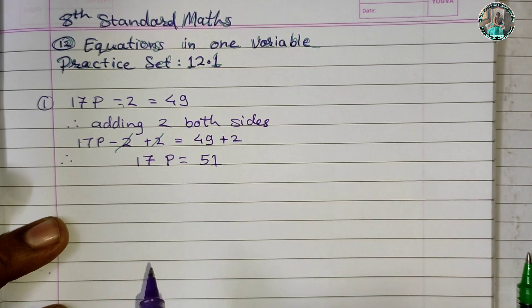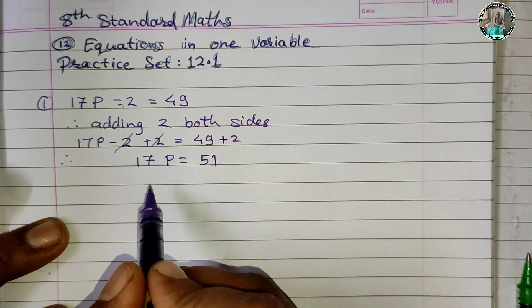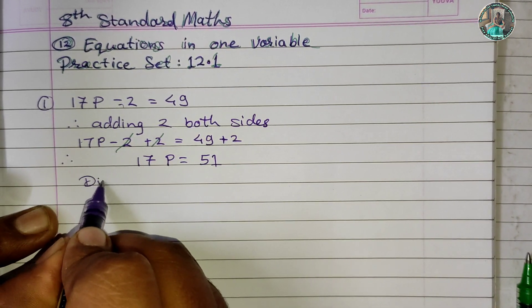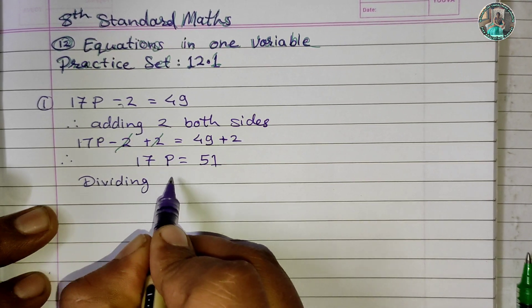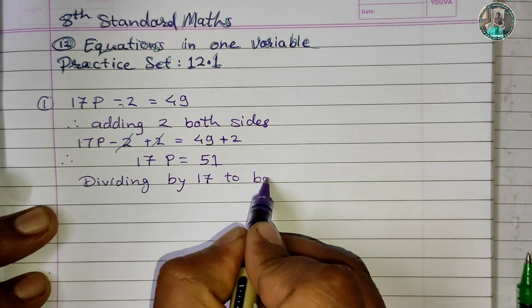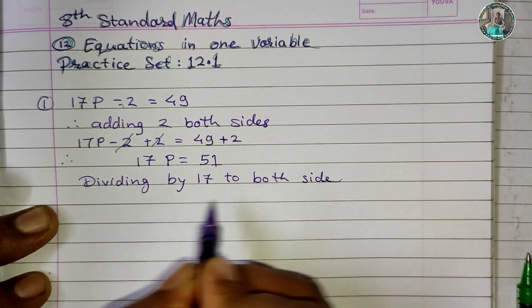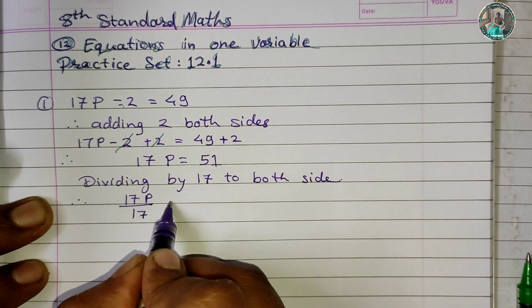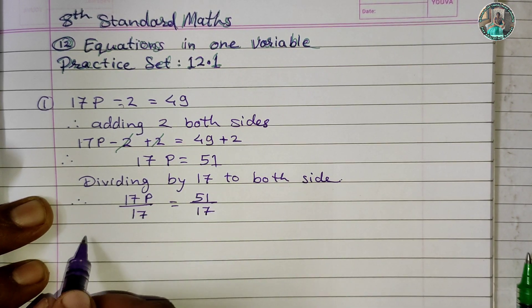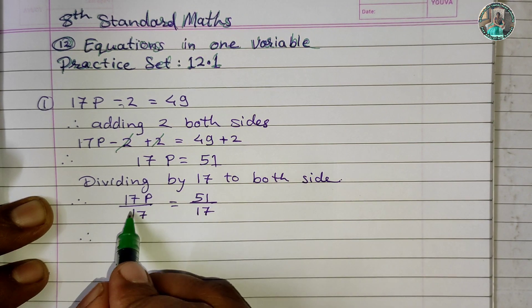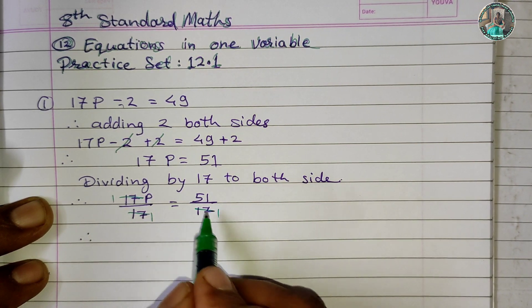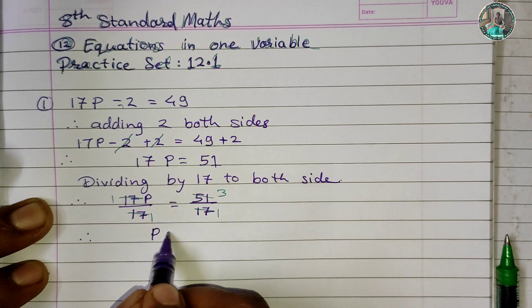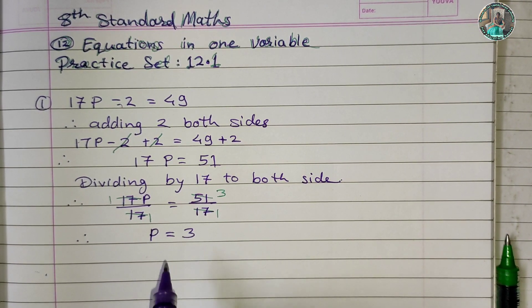Now we have 17p equals 51. Since 17 is multiplying p, we need to divide both sides by 17. Dividing by 17 to both sides: 17p/17 = 51/17. Therefore, p = 3. This is the solution of the equation.